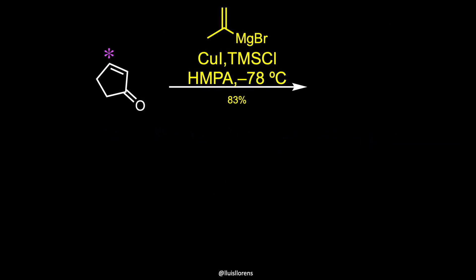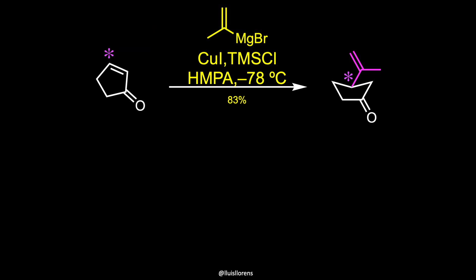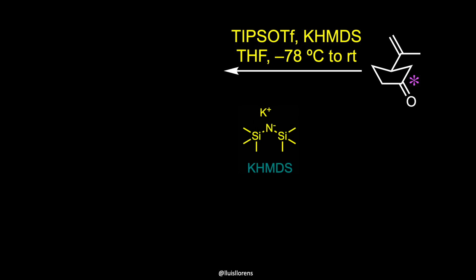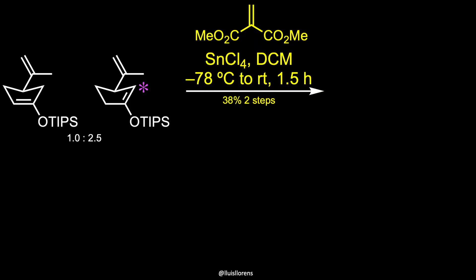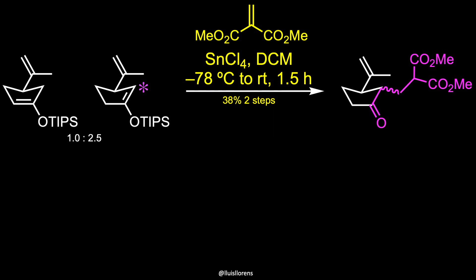The synthesis commenced with the preparation of the transhedrindane skeleton. The isopropenyl addition to commercially available cyclopentanone gave rise to a mixture of enantiomers that was used in the next step. Subsequent treatment of the ketone with KHMDS and triisopropylsilyl trifluoromethanesulfonate at minus 78 degrees Celsius in THF delivered a mixture of regioisomeric silyl enol ethers that were exposed to tin tetrachloride in the presence of methylene dimethylmalonate to give the corresponding product as an undetermined mixture of diastereomers after purification by flash column chromatography in 38% yield over two steps.